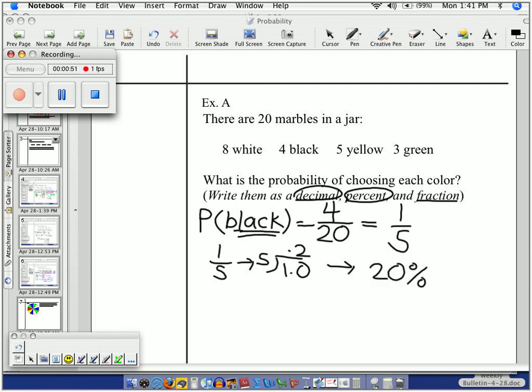How'd you guys do? You get it right? So 20% of the time, you'll get a black marble. Or you can say 1 out of 5 times, you'll get a black marble. Or you can say 0.20 is your probability.